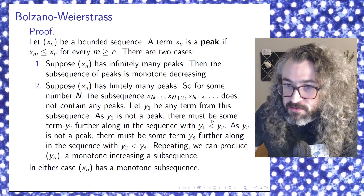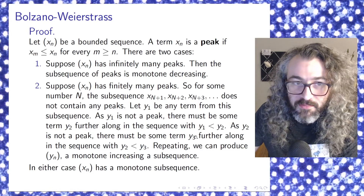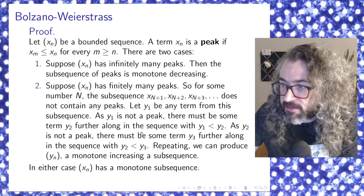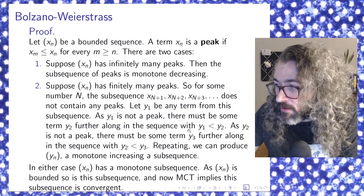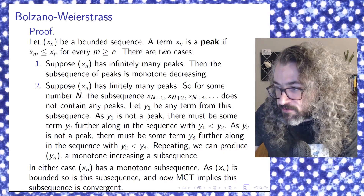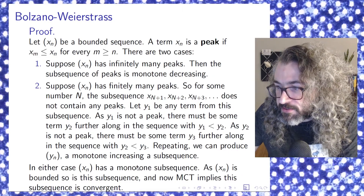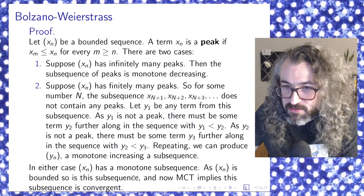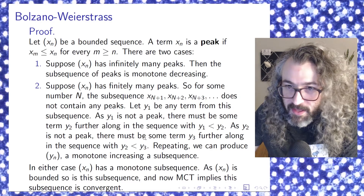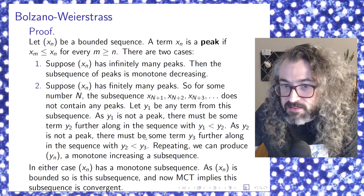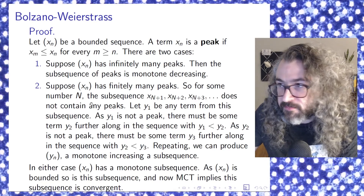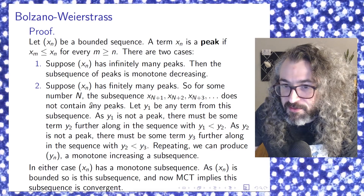So in either case, the original sequence has a monotone subsequence — in the first case it was monotone decreasing, in the second case it was monotone increasing. And because the original sequence is bounded, so is the subsequence. Now you've got a monotone bounded subsequence, so the monotone convergence theorem tells you that the subsequence has to be convergent. And that's what we wanted: we found a convergent subsequence of the original bounded sequence. That's the end of the proof — that's one proof of Bolzano-Weierstrass.